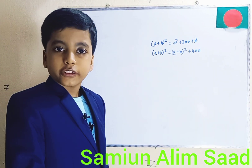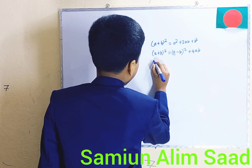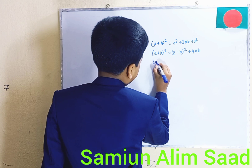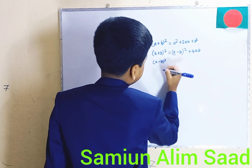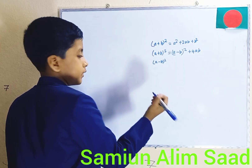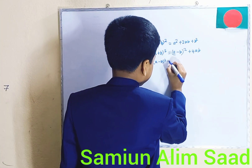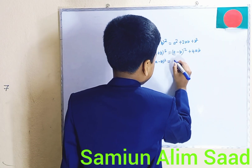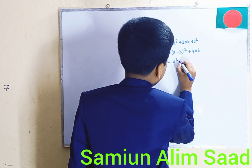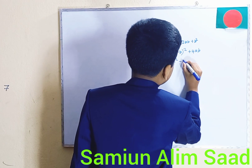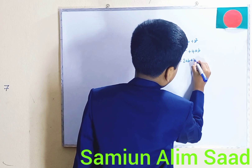Let's move on to the next formula. And that formula is A minus B whole square. This isn't just the formula — this is just the starting point.